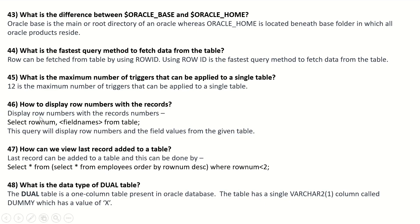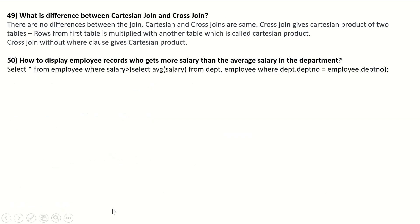How to display row numbers with records? Use: SELECT ROWNUM, field_names FROM table — this will display row numbers and field values from the given table. How can the last record added to a table be retrieved? Use: SELECT * FROM (SELECT * FROM employees ORDER BY ROWNUM DESC) WHERE ROWNUM < 2. What is the data type of the DUAL table? The DUAL table is a one-column table present in Oracle. It has a single VARCHAR2 column called DUMMY which has a value of 'X'.